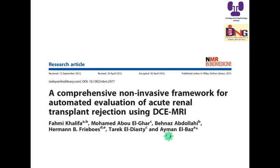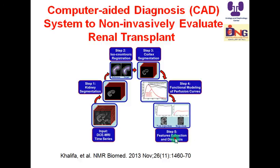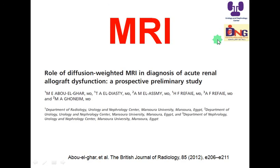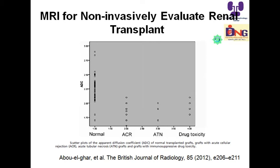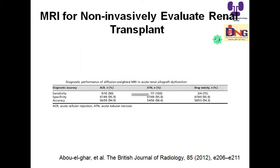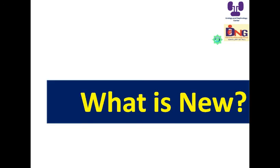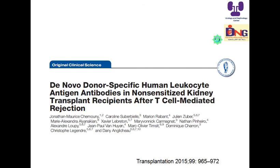An MRI study using diffusion-weighted imaging and computerized-aided diagnosis has been published to non-invasively evaluate renal transplants. A prospective study examined the role of diffusion-weighted MRI in acute allograft dysfunction. Even though this study shows some data, it is still preliminary, and diagnosis of rejection ultimately depends on pathology. We do not yet have an accurate non-invasive method for diagnosing rejection.